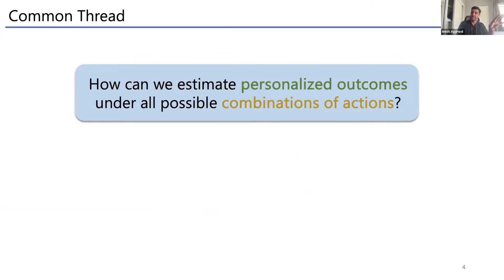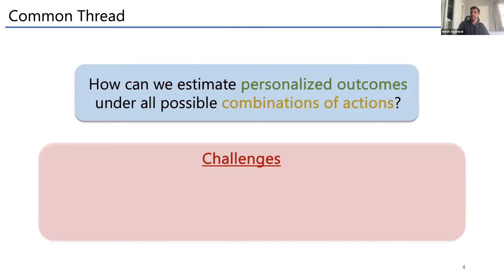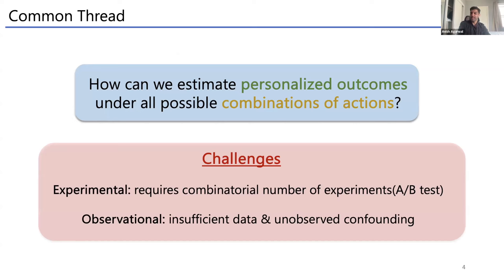The challenges: in an experimental setting it requires a combinatorial number of experiments. In an observational setting you may have insufficient data and unobserved confounding — you're seeing outcomes for a very specific set of combinations, so there's missing randomness. This raises questions about extrapolating to unseen outcomes for unseen interventions, individuals, and combinations.